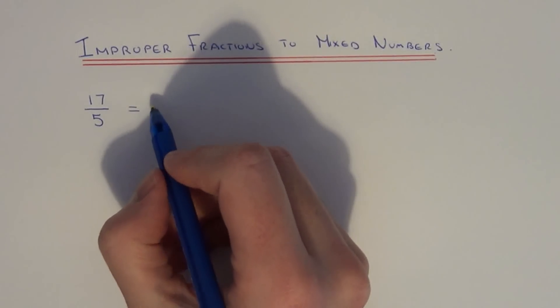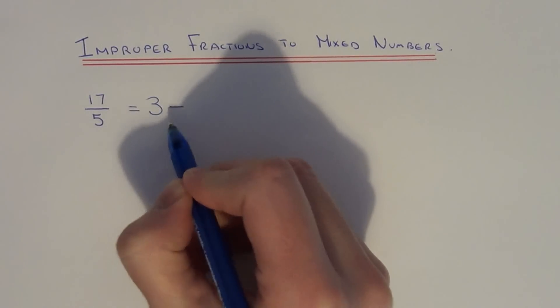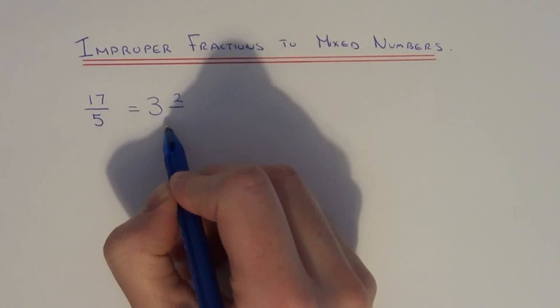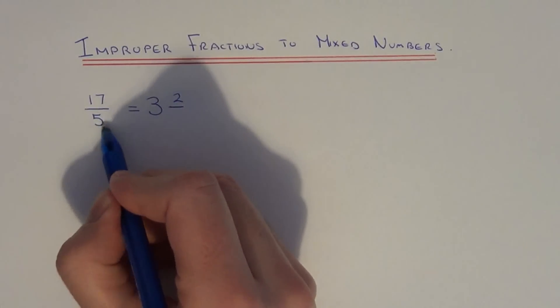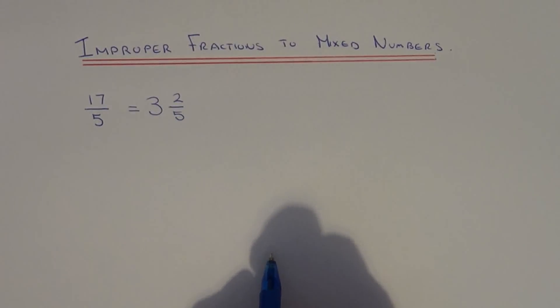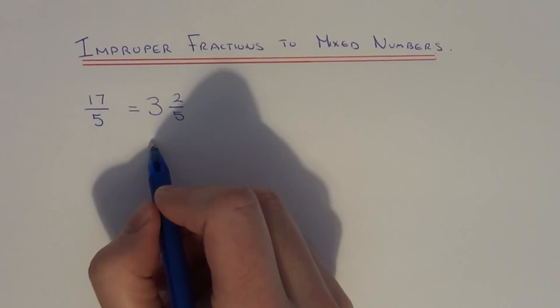So what you do then, on your mixed number, you put 3 as the whole part, the remainder of 2 goes on the numerator, and the denominator, which was 5 here, will be 5 on your mixed number. So 17 fifths is the same as 3 and 2 fifths.